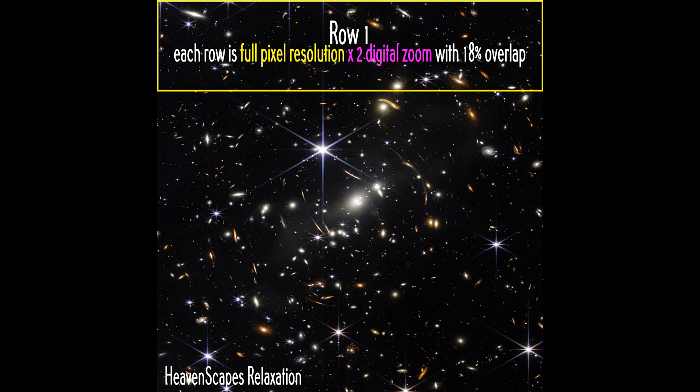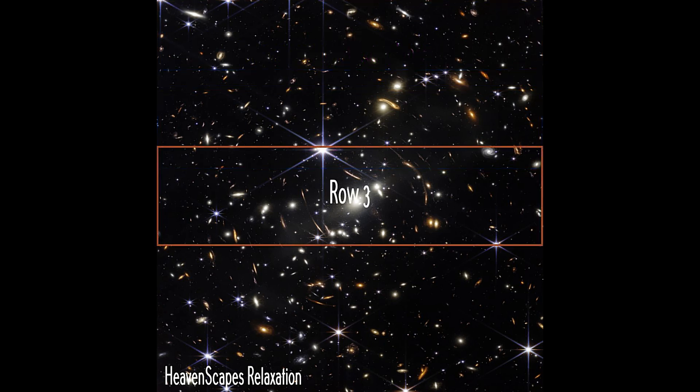Here's how things work for this video. I determined that there was sufficient detail in the image to look at it in full pixel resolution times 2 on a digital zoom. Then we determined the number of rows in the picture that we could fit at 4K. Here's row 1, here's row 2 with about an 18% average overlap for all rows, and here's row 3 which has the center of the Galaxy Cluster and so much of the detail of the gravitational lensing that's the closest to the Cluster.